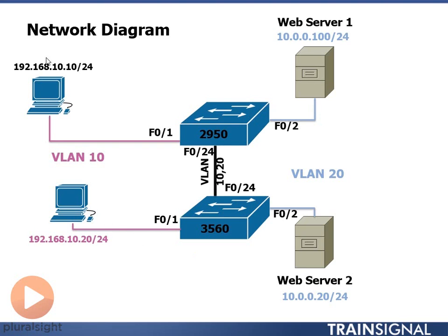Over on the left I have VLAN 10, part of network 192.168.10.0. On the right I have my web servers on network 10.0.0.0/24. On the 2950, I want to configure port F0/1 to be on VLAN 10, F0/2 to be on VLAN 20, and F0/24 to be my trunk port to carry both VLANs 10 and 20. We'll do the same thing on the 3560 switch.